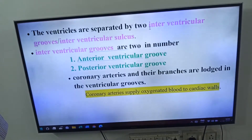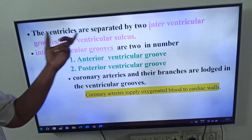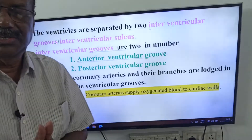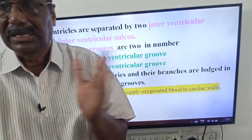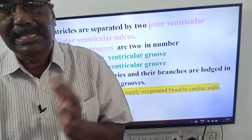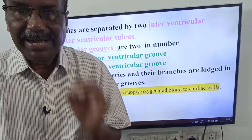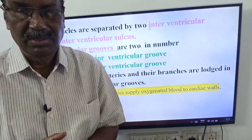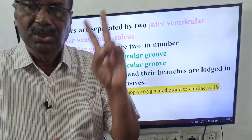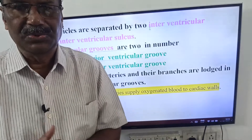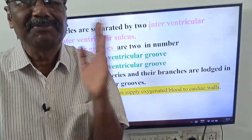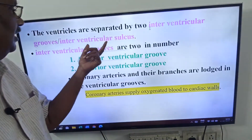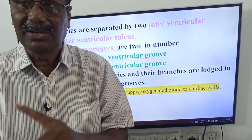Now, coming to the ventricles — the external structure of the ventricles. The ventricles are separated by two interventricular grooves, also called interventricular sulcus. The right and left ventricles are separated from each other externally by the interventricular groove. There are two interventricular grooves.